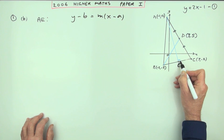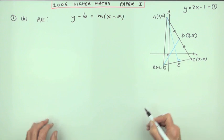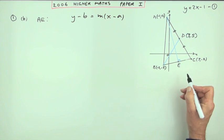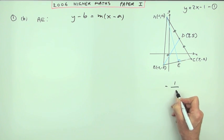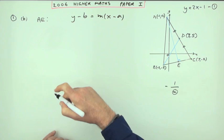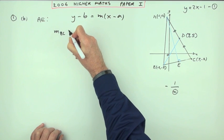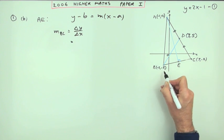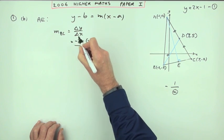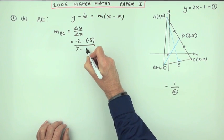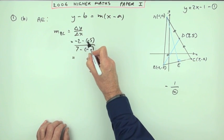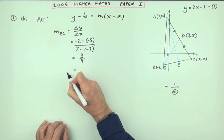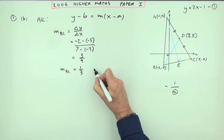I can't assume E is the midpoint — that's only true for an isosceles triangle. Instead I use the fact that it's a right angle: if two lines are perpendicular, the product of their gradients is negative one. So I need the gradient of BC first. That's negative 2 take away negative 5 over 7 take away negative 2: that's 3 over 9, so the gradient of BC is one third — first mark.